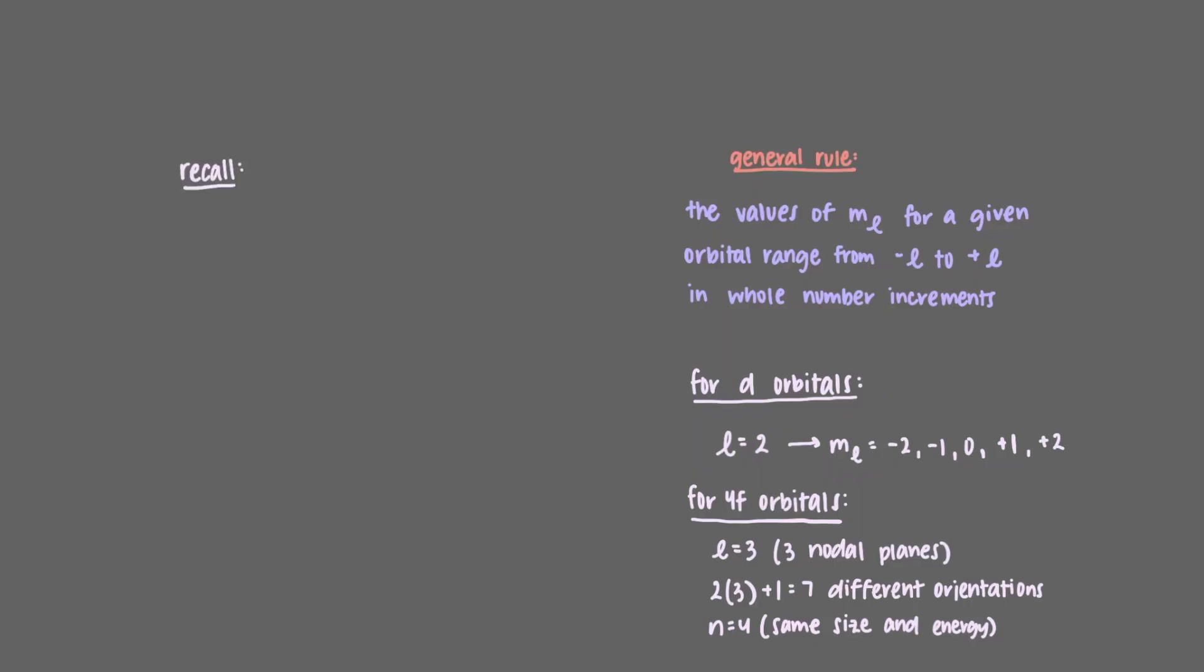Recall that in the previous video, we briefly defined the Pauli exclusion principle as saying that no two electron waves can have the same set of quantum numbers. So this new quantum number that we just learned about, the magnetic quantum number, gives us a little more specificity in describing an electron wave.